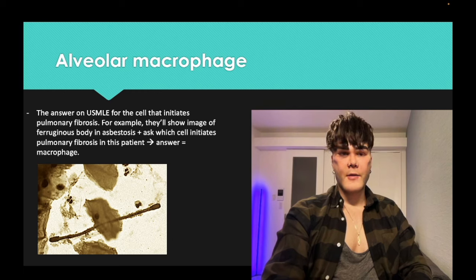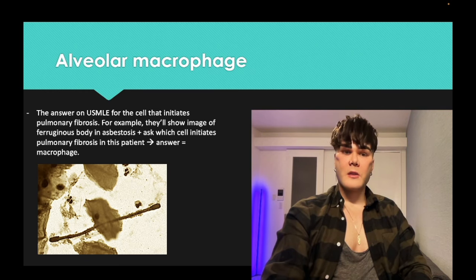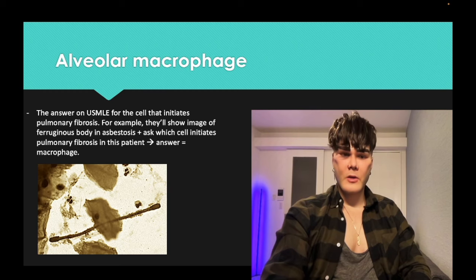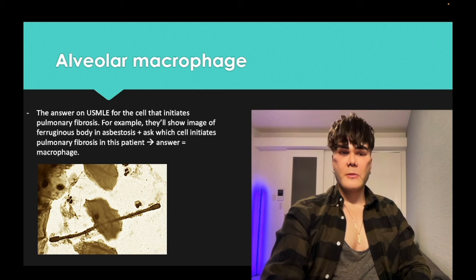USMLE wants you to know that the alveolar macrophage is the cell that initiates pulmonary fibrosis. For example, in asbestosis, you can see a ferruginous body — a barbell-looking structure — being phagocytosed by the macrophage. For any lung pathology question asking which cell initiates pulmonary fibrosis, the answer is macrophage.